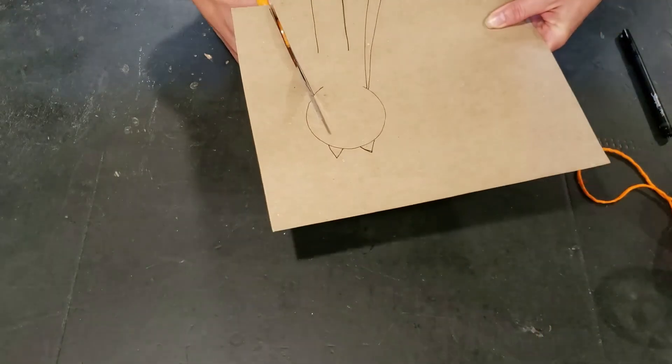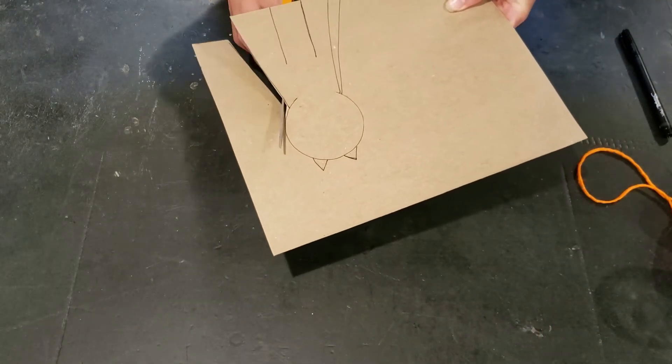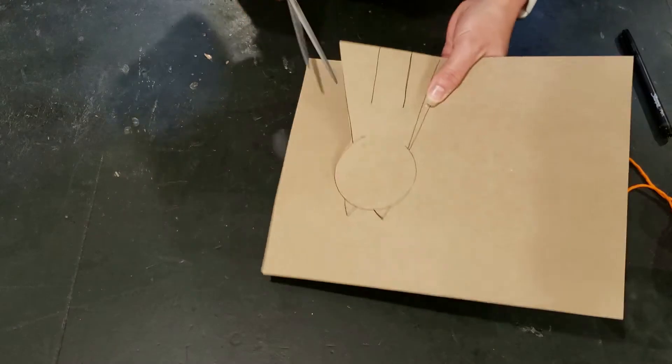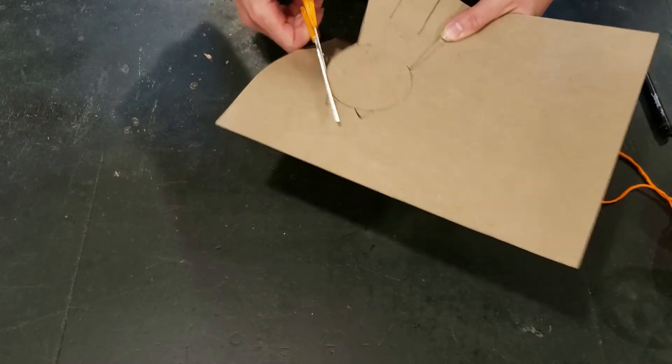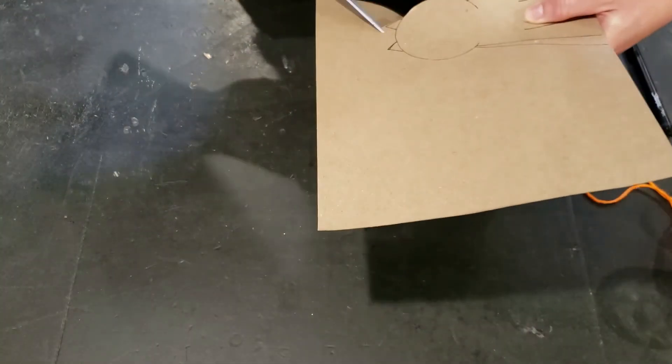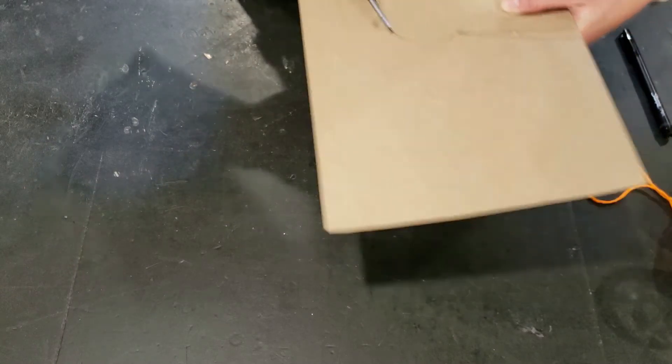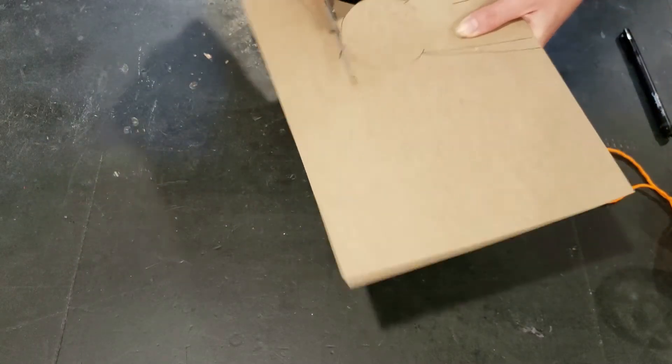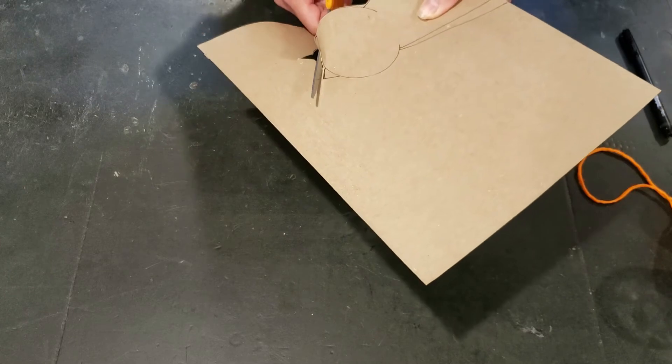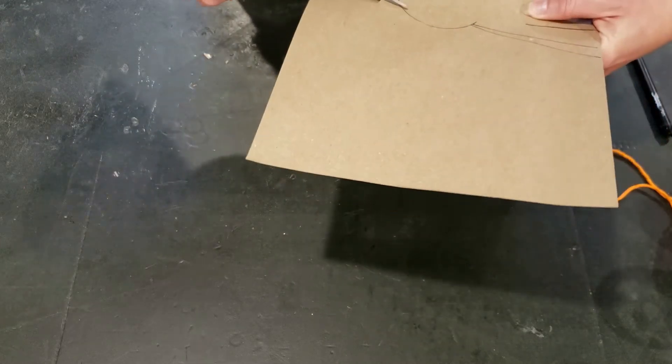So cut along your lines. Cut out your ear shape. You can even change it a little bit as you cut if you didn't like your lines. Your lines can just be a guide so that you kind of know what you're doing.